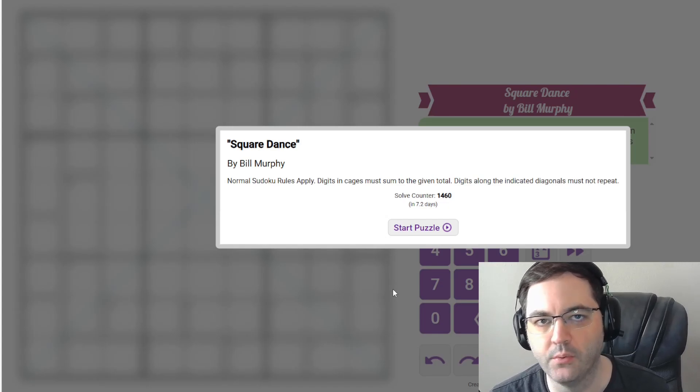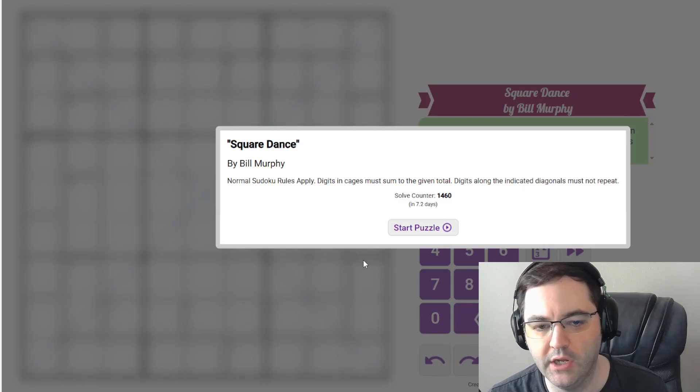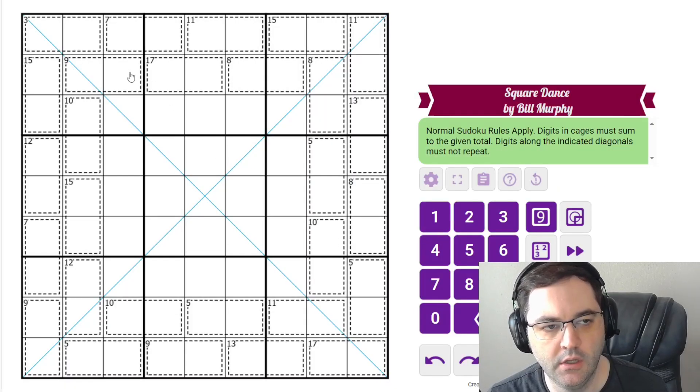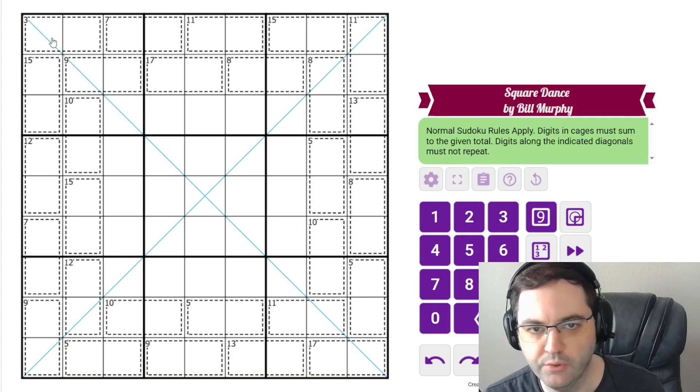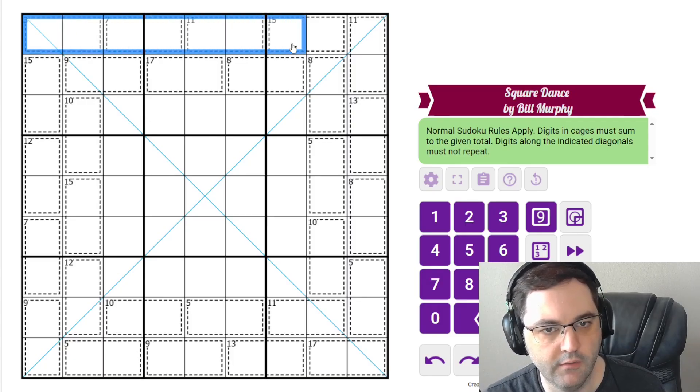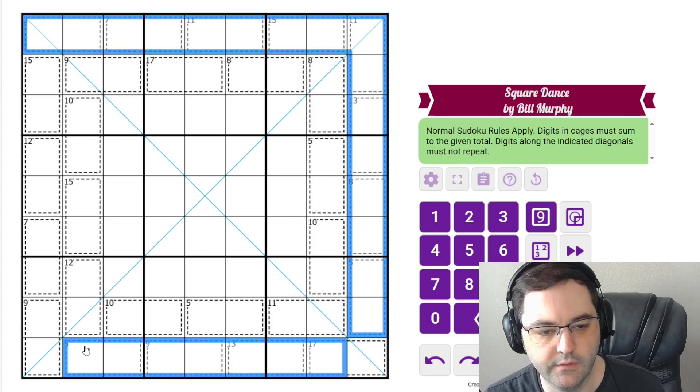Hi everyone, this is the Gas Walkthrough for May 27th. I'm Philip Newman. Today I'm solving Square Dance by Bill Murphy. Earlier in the month Bill had a diagonal killer and this is another one. Bill's been messing around with visual themes here. We have all these cages around the edge of the grid.